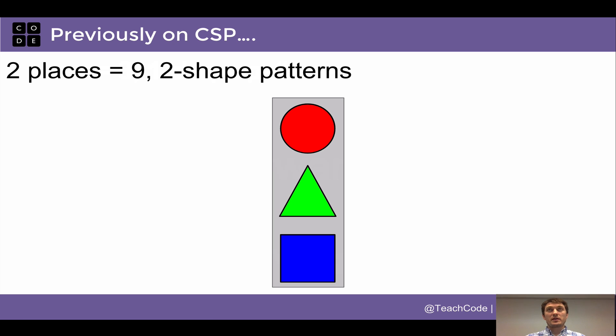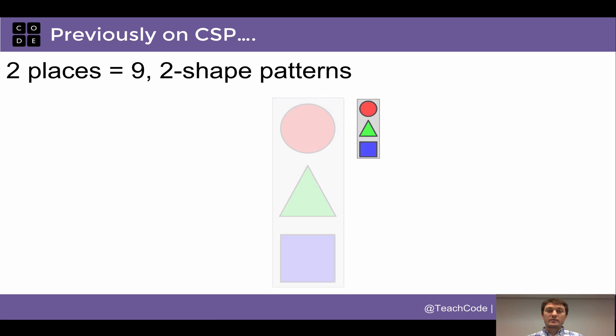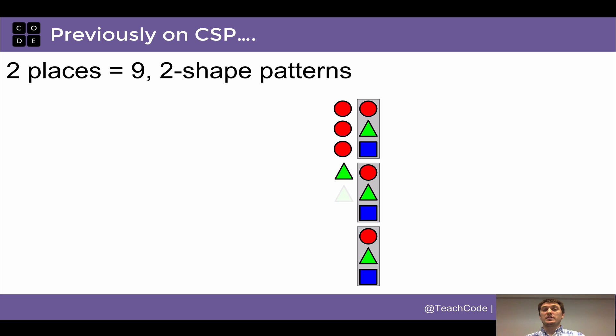If we add two places, so we want to make a two-shaped pattern, there are nine of those and we can make them by saying, well let me group the set of patterns that I already know about and then I can just throw a circle in front of each one of those, a triangle in front of each one of those, and a square in front of each one of those. And this is a way that I can generate all of the possible two-shaped patterns and there are nine of them.